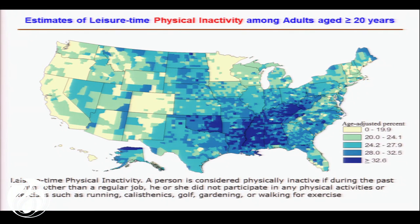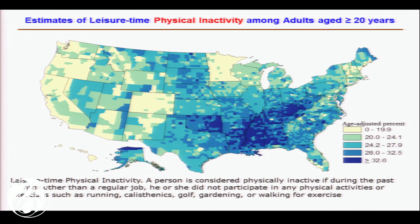I wanted to move now to something that can actually be done. Sherry had suggested we try to link this to something that can be done in the community — some public health handle. There are two easy public health handles: one is fitness and one is sleep. This is a map of physical inactivity — for those of you who've seen the obesity maps, this map is very similar to the map of obesity or type 2 diabetes. Physical inactivity is defined as somebody who basically sits on a couch most of the time: no golf, no gardening, no brisk walking, nothing.